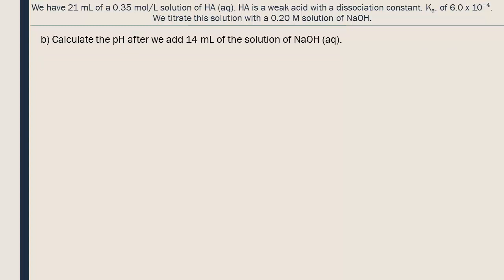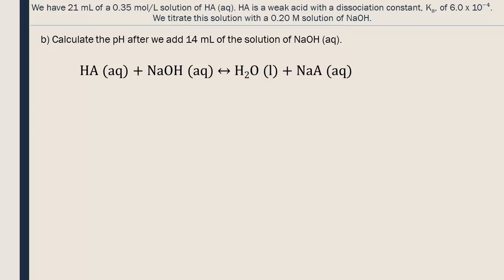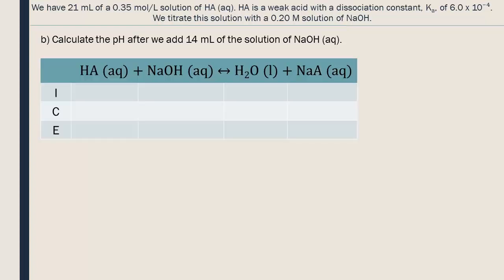Part B. Here's the equation of the neutralization. In a titration, all of the base that is added will react with the acid to create water. The two leftover molecules, the Na plus and the A minus, will join together to form the other product. To calculate the pH after adding 14 milliliters of the base, we need an ICE table. Pay attention — we cannot directly insert the concentrations of HA and NaOH, because when we combine them, they are going to change.